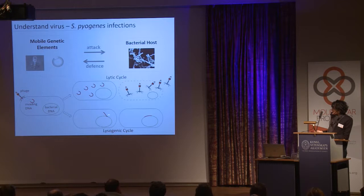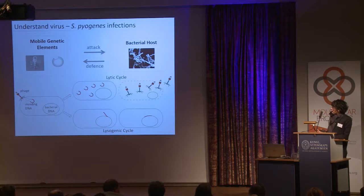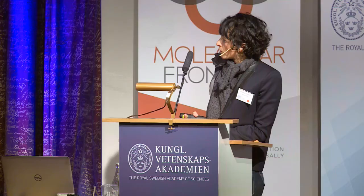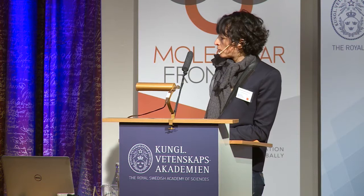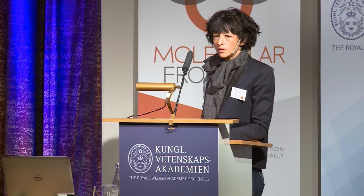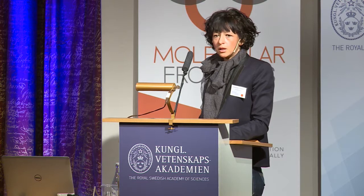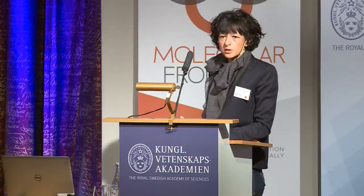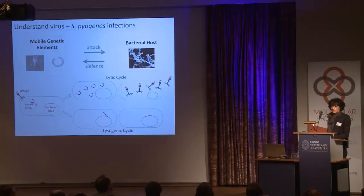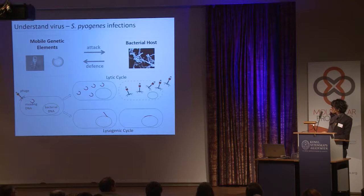In either case — whether bacteria are attacked by phages, plasmids, or transposons — they have defense systems allowing them to attack those mobile genetic elements. You have different types of defense systems, most of which are considered innate immunity, in reference to innate and adaptive immunity in eukaryotic organisms. The restriction enzymes, for example — those enzymes used to cleave and clone DNA — were identified through understanding defense mechanisms in bacteria against viruses, using restriction modification systems. CRISPR-Cas is really the first and only adaptive immune system existing, not only in bacteria but also in archaea.